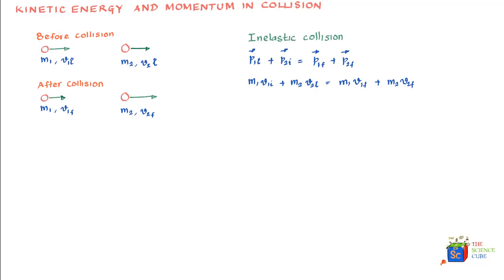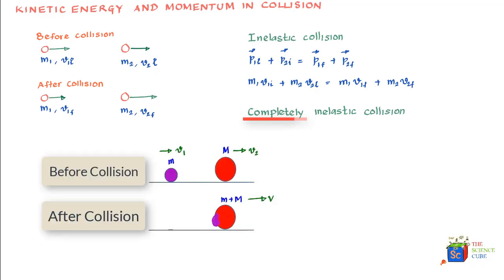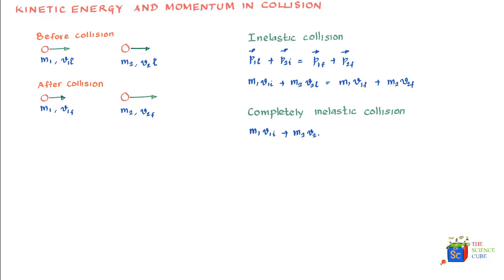Now let us say this was a completely inelastic collision, which essentially means that mass M1 crashed into M2 and then the two masses stuck together and moved ahead together. In which case, the combined mass M1 and M2 would have a common velocity, let's call it capital V. So we can write the above equation like this: M1·V1_initial + M2·V2_initial = V·(M1 + M2).